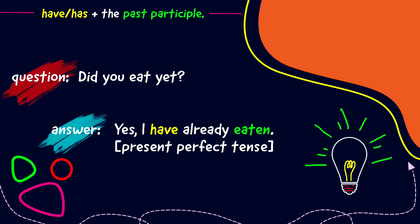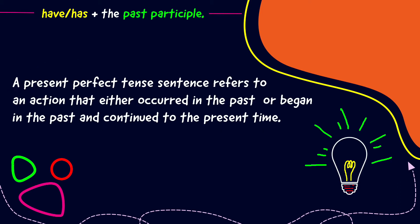We are talking now about something that's already happened in the past. A present perfect tense sentence refers to an action that either occurred in the past or began in the past and continued to the present time.